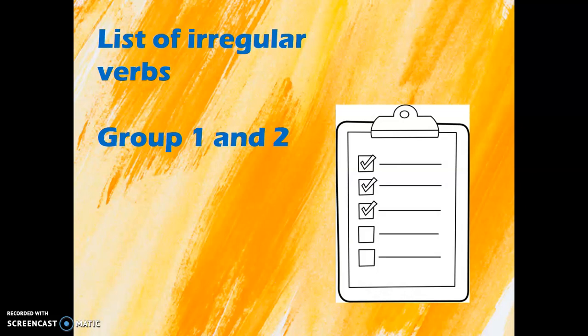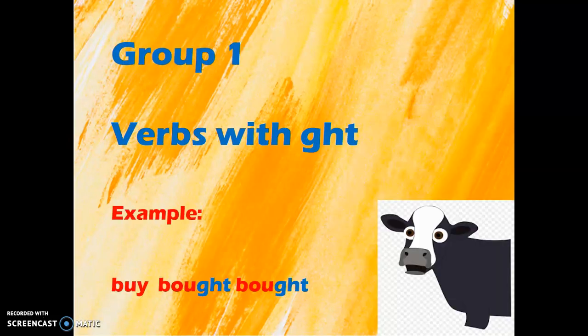Hello there. We are here for the list of irregular verbs, group 1 and 2. Let me tell you that the verbs that are irregular can be classified according to their ending or to some combinations that they have.